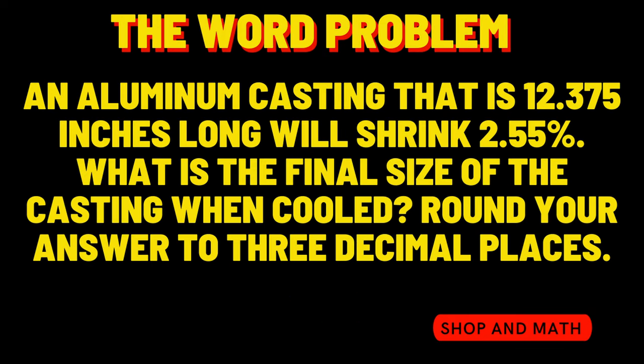An aluminum casting that is 12.375 inches long will shrink 2.55%. What is the final size of the casting when it is cooled? Round your answer to the third decimal place.